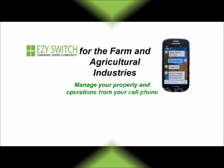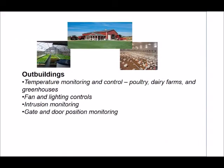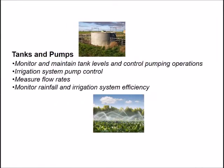To show some of these capabilities, we have chosen to demonstrate an application in the farm and agricultural industry. This industry lends itself to several applications for outbuildings, temperature monitoring and control, fan and lighting controls, intrusion monitoring, gate and door position monitoring, and for the many tank and pump applications on a modern farm — monitoring and maintaining tank levels, irrigation system and pump control, measuring flow rates, and with the proper sensors, even monitoring rainfall and irrigation system efficiency.